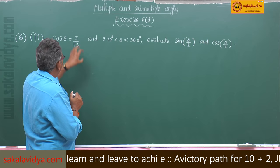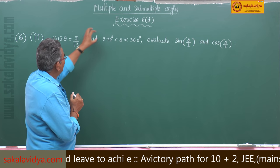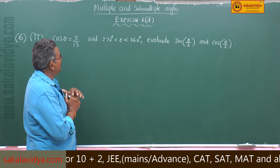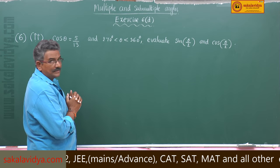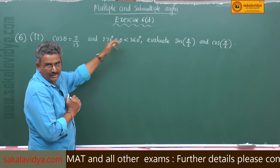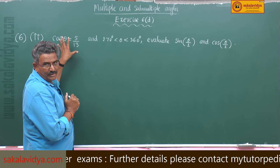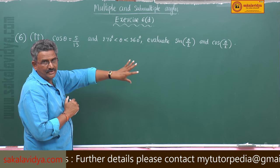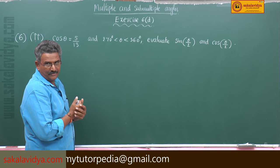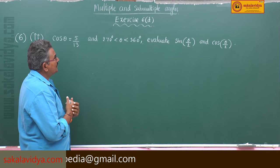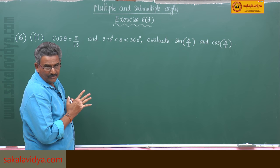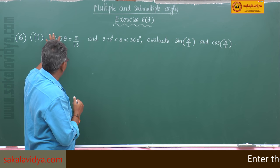Here, the condition on θ is given, so that means θ lies in the fourth quadrant. As θ lies in the fourth quadrant, cos is positive. The remaining trigonometric ratios except cos and sec are negative. So here we have to find out sin(θ/2) and cos(θ/2) with the help of cos θ.